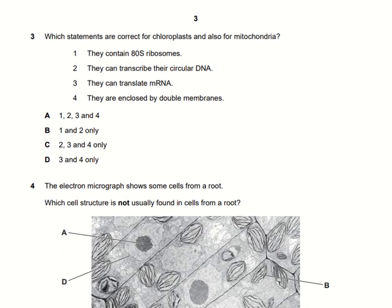Which statements are correct for both chloroplasts and mitochondria? They do not contain 80S ribosomes — they contain 70S ribosomes instead. They can transcribe their circular DNA. Yes, they can. They can also translate their messenger RNA. They are enclosed by double membranes. So points 2, 3, and 4 are correct, making option C the right answer.